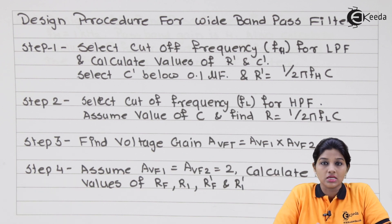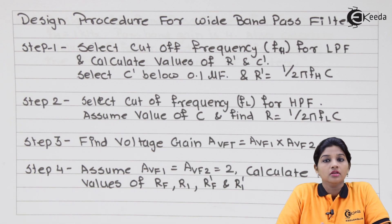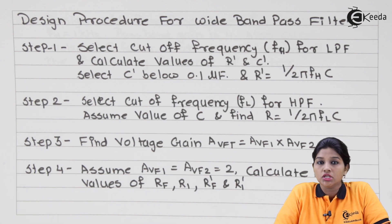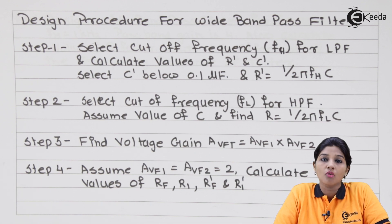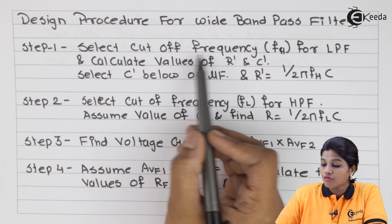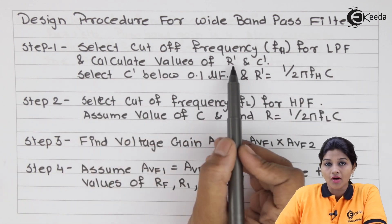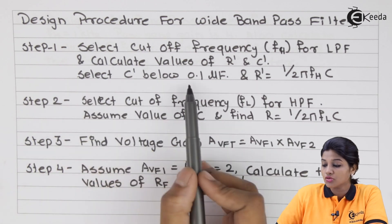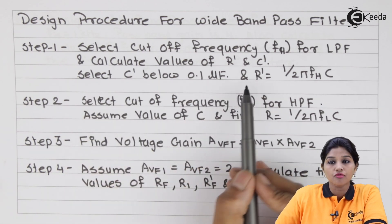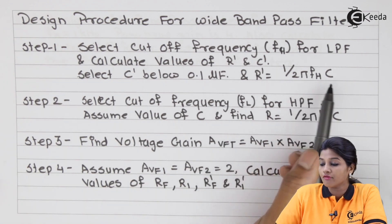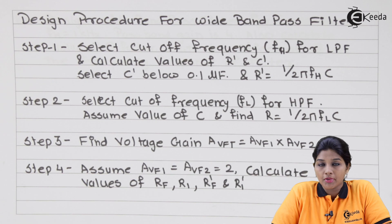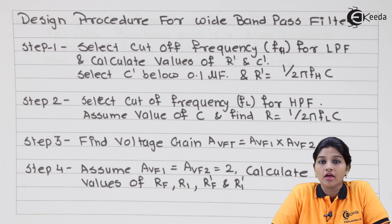During designing we need to consider fh and fl, then various values of components — some values we need to assume within a certain range. The first step is: select cutoff frequency fh for the low pass filter and calculate values of R-dash and C-dash. Select C-dash below 0.1 microfarad, and therefore R-dash equals 1 upon (2π × fh × C-dash).